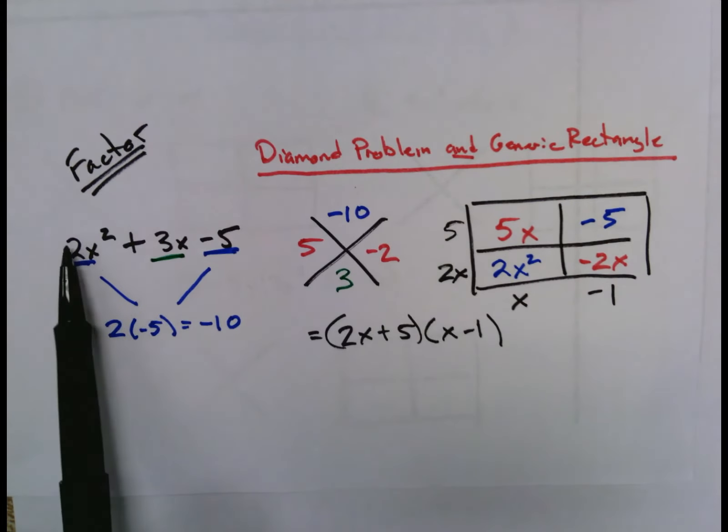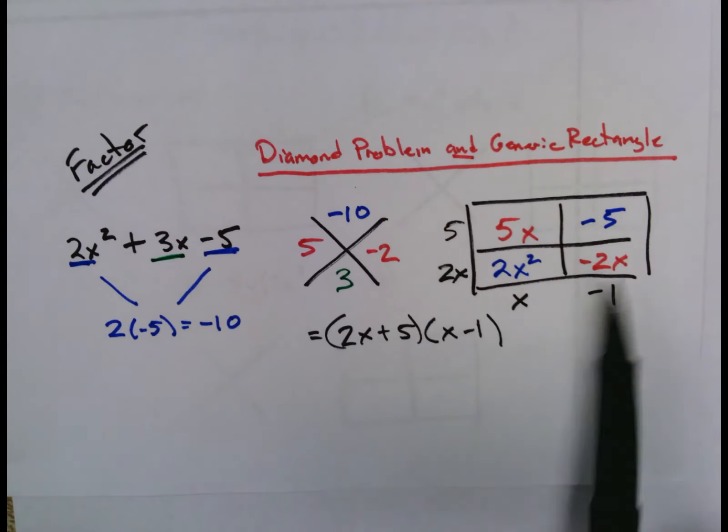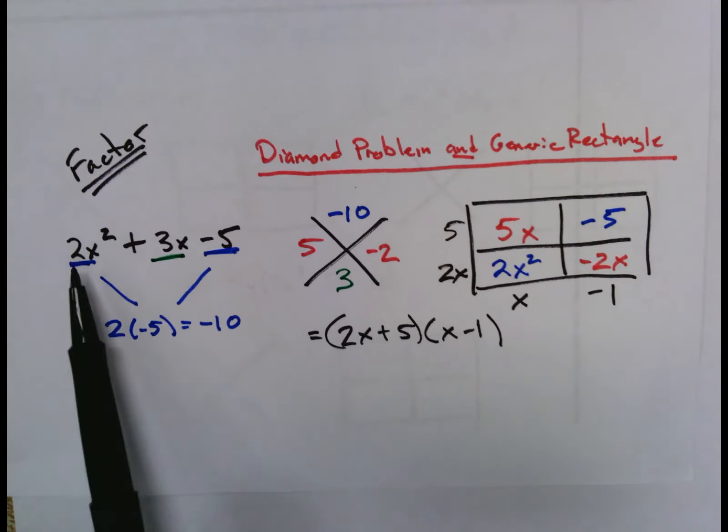If it was just a 1 in this spot, then we would only need to do the diamond problem. We don't need to do the generic rectangle. But by having a leading coefficient other than 1, it forces you to have to think differently about just your diamond problem work.